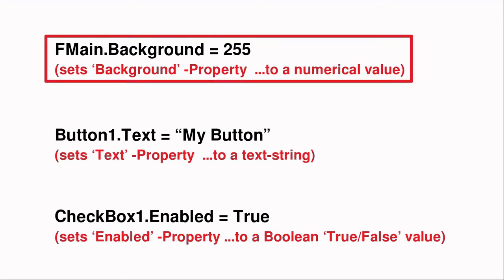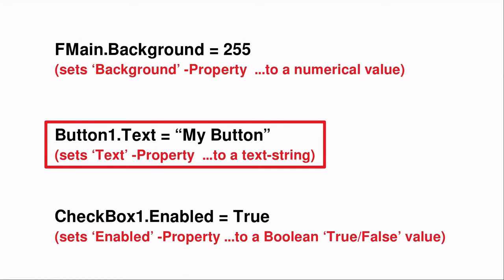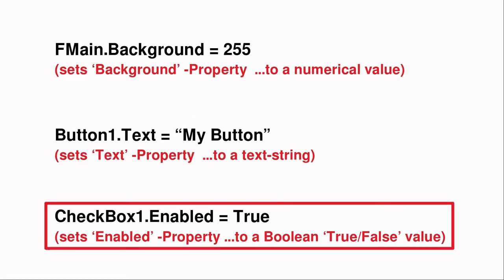In this example, the code sets the fMain form's background color to the numerical value 255, which happens to be an intermediate blue. Here, the code example sets the control Button1's text property to the text string 'myButton'. And in the final code example, CheckBox1's enabled property is set to the binary choice, true. This property can only take one of two possible values — one or zero, true or false. In programming, this is referred to as a Boolean or binary variable. In this case, the checkbox control is either accessible by the user at runtime, or it's not, and it's grayed out to tell the user that it is not an available option.